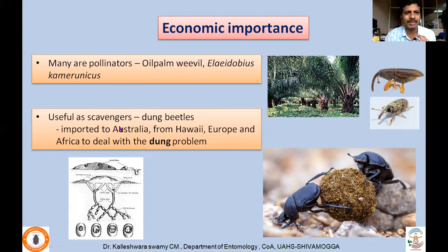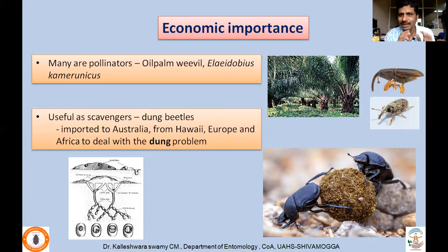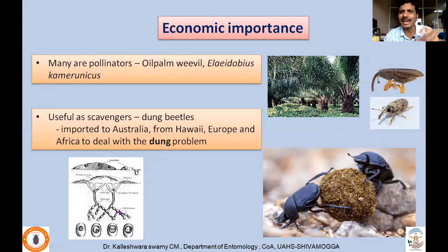Few of them are scavengers like dung beetles. They actually dig in the soil and place eggs in a dung ball to preserve the young ones — as soon as the eggs hatch, they get food. With that process, soil health actually increases and the infiltration rate of water also increases. As a result, soil quality improves. This is one of the important ecosystem services these insects actually provide.